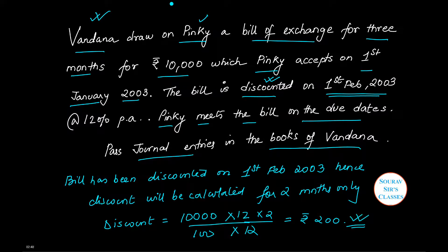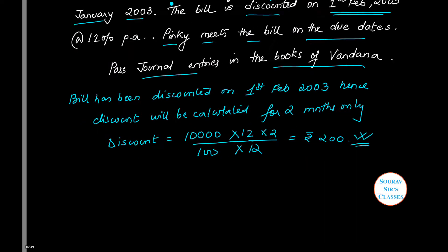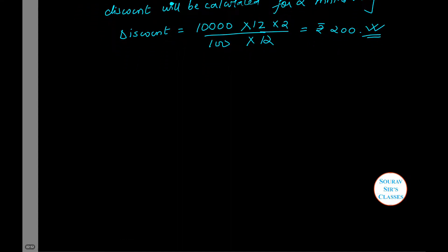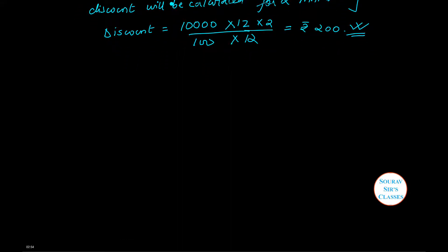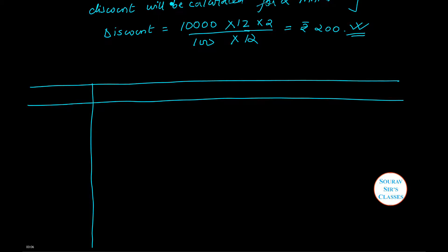As we have already calculated the amount of discount, let us now pass the journal entries in the books of Vandana who is drawing the bill on Pinky. So let us make the columns.